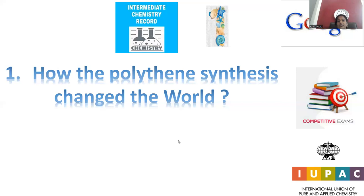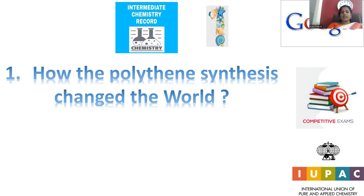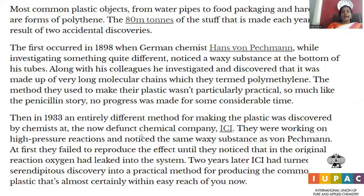Let's go with question number one: How did polythene synthesis change the world? Polythene is a kind of polymer, regarded as a plastic material, and its synthesis paved the way and entirely changed the profile of the world. Earlier, before the invention of polythene, most things were related to huge, expensive, heavy materials, metals, and machinery — highly expensive, not affordable for normal humans.